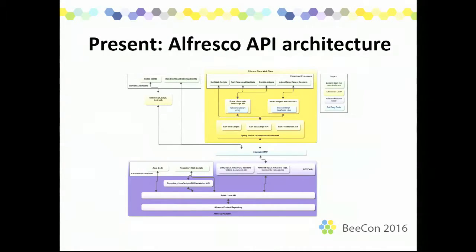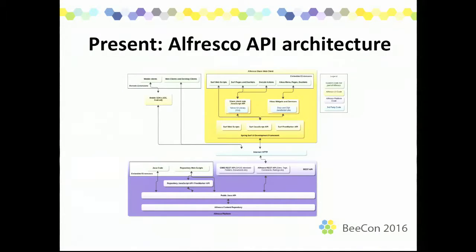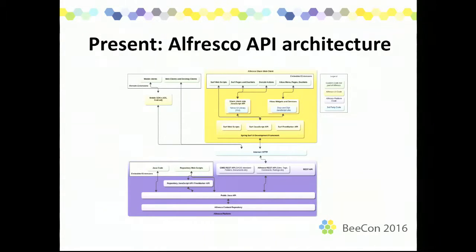I borrowed this slide from the documentation — here's a quick slide of the current architecture. A lot of this is evolving. The platform is the blue-purple bit at the bottom, with the API layer hidden in the middle. On top are client examples around Surf, Share, and other integrations. Something you can reference later if you haven't already seen it in the documentation.